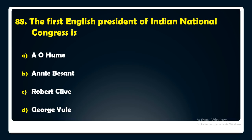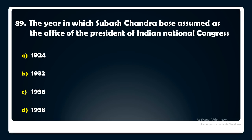The year in which Subhash Chandra Bose assumed the office of President of the Indian National Congress was — 1924, 1932, 1936, or 1938? The answer is: Subhash Chandra Bose assumed the office of President of the Indian National Congress in 1938.